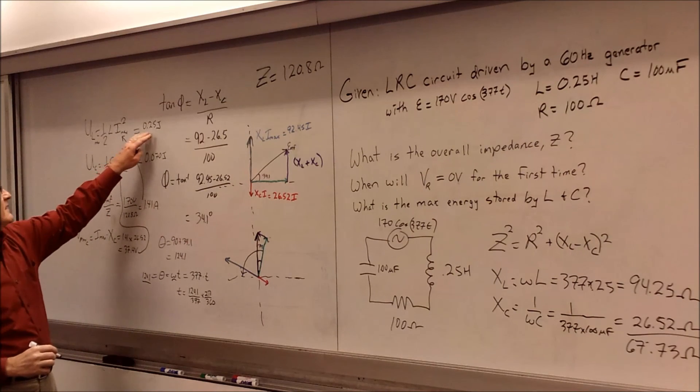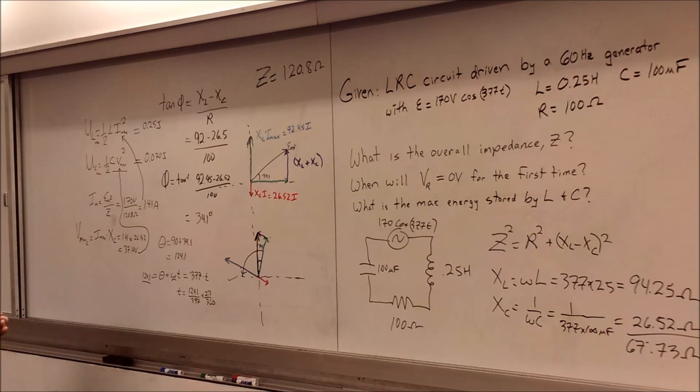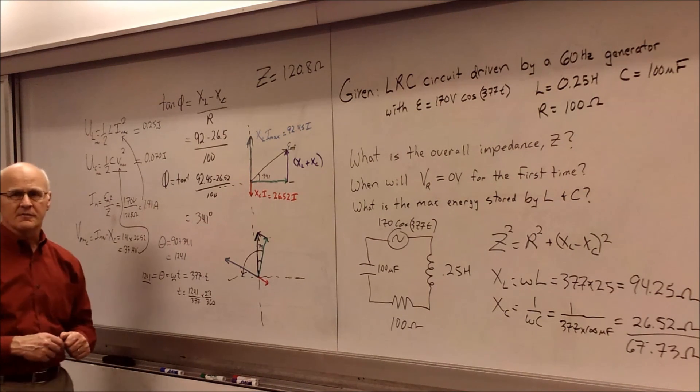So we can see that the inductor has, well, three and a half times more energy stored than the capacitor has in this scenario for this circuit. Now, if we were to speed it up or slow it down, these values would change a little bit. But for the standard frequency of 60 hertz and 170 volts coming from a generator, these are the values we would get for these types of components if we put them into an RLC configuration. And that's it for this problem.